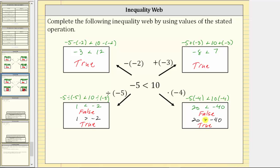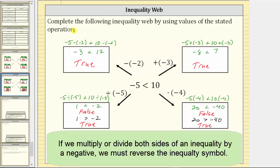So we've discovered the most important part of solving inequalities: if we multiply or divide both sides of an inequality by a negative value, we must reverse the inequality symbol. This is the most important rule we must remember when solving inequalities, because we solve inequalities just like equations except for this one rule.